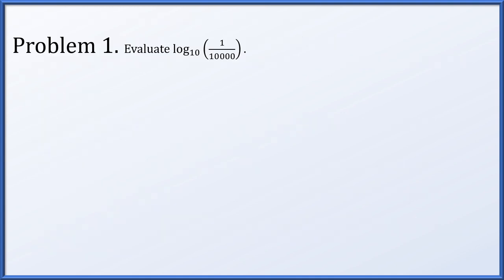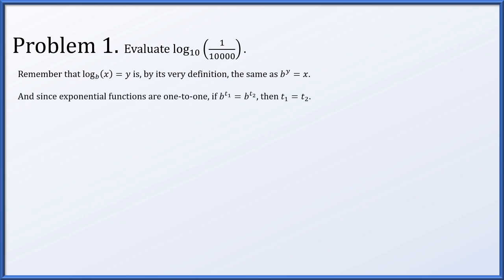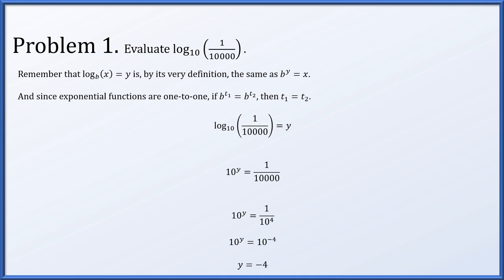In problem one, we're asked to evaluate the log base 10, otherwise known as the common logarithm of 1 over 10,000. Remember that a logarithmic equation like log base b of x equals y is by definition a way of rewriting an exponential expression b to the y equals x. Exponential functions are one to one, meaning if you have the same base raised to two powers and the result is equal, those powers were actually equal to begin with. So we set log base 10 of 1 over 10,000 equal to y, convert it to the equivalent exponential expression 10 to the y equals 1 over 10,000. Since 1 over 10,000 is 10 to the minus 4, we have 10 to the y equals 10 to the minus 4, so y equals negative 4.